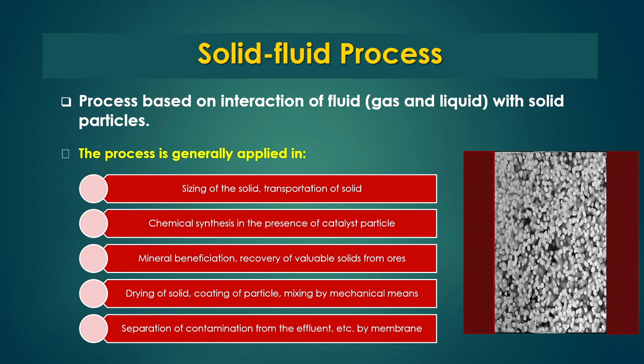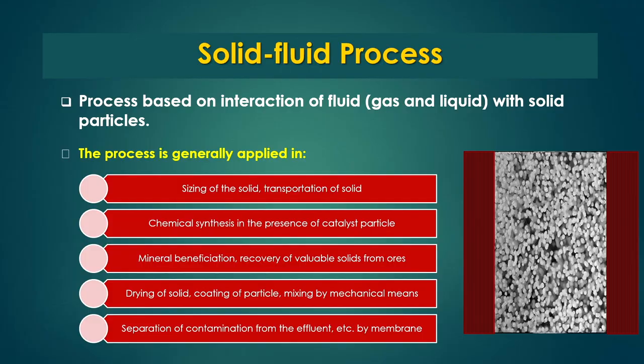Drying of solids involves interaction between gas and solid: hot or warm gas is supplied to wet material to evaporate moisture from the solid. Coating of particles with a polymeric substance is also a solid-fluid operation. Sometimes mixing of solid and liquid is required to enhance reactions or physical processes like drying. Separation of contaminants from wastewater or water is done by membrane, which is a porous solid material through which contaminants pass and are separated.